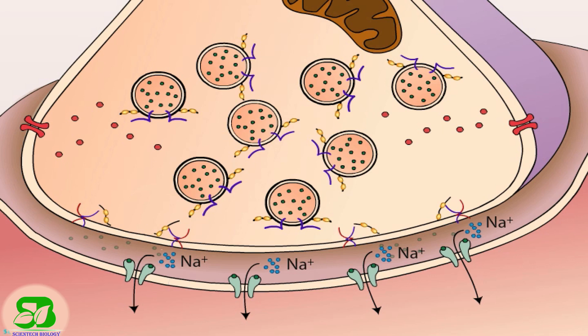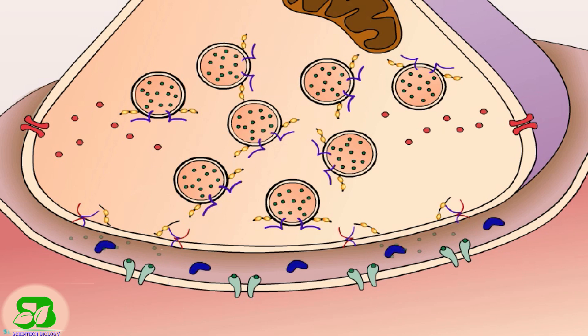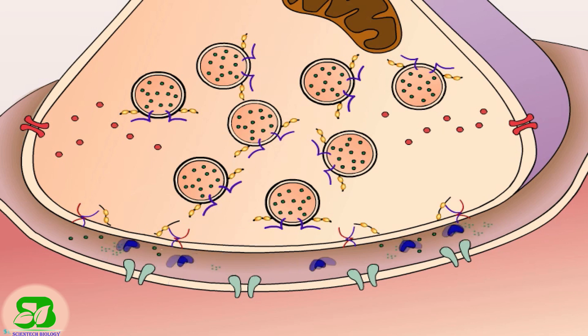Transmitters are inactivated or removed rapidly from the synaptic cleft, so the transmission is brief and accurately follows the presynaptic input signal. For acetylcholine, an enzyme in the synaptic cleft — acetylcholinesterase — breaks down the acetylcholine into choline and acetate.